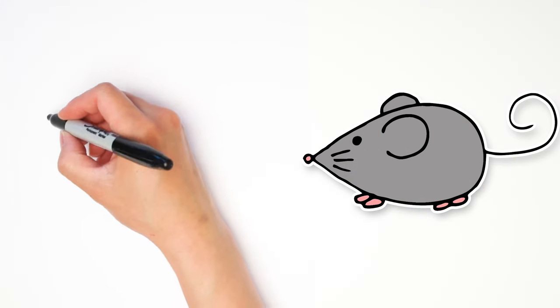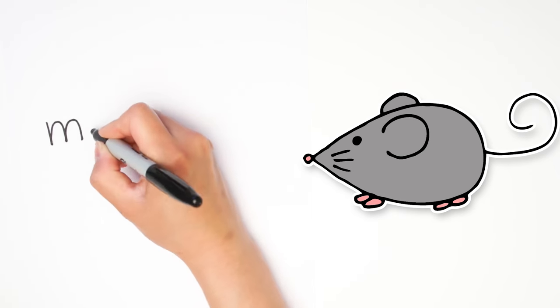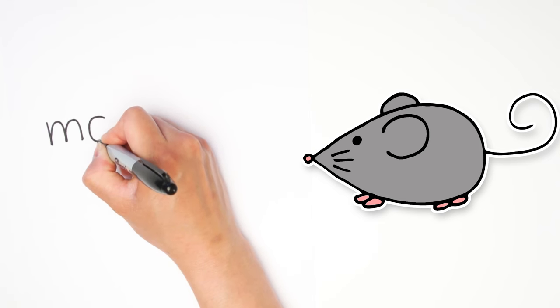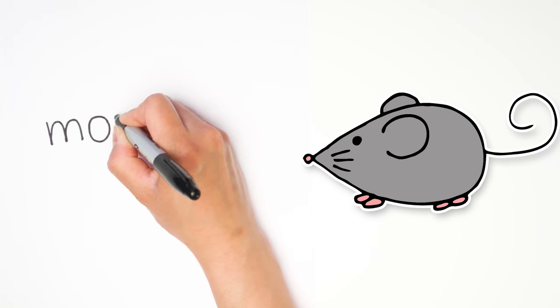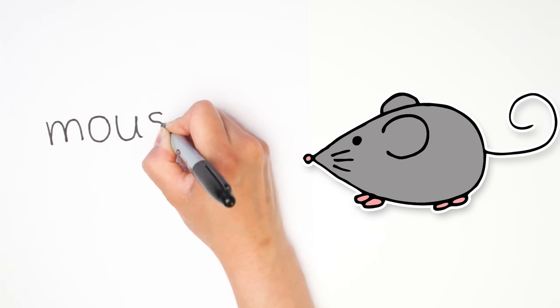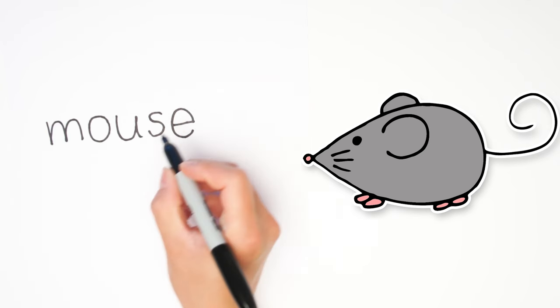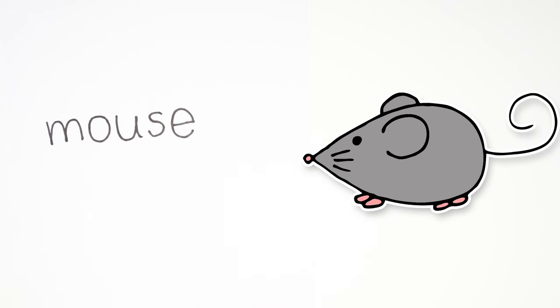All right, just find some empty space on your paper so we can label our mouse. Let's write M-O-U-S-E. That spells mouse, and we're all done.